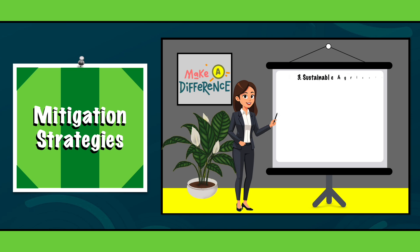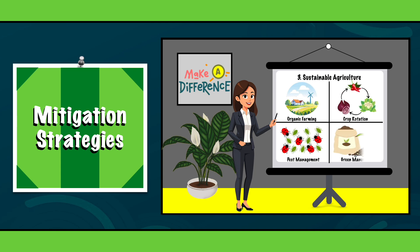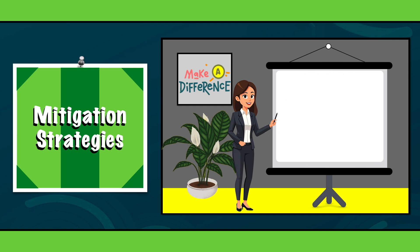3. Sustainable agriculture. Using organic farming methods such as crop rotation, integrated pest management and green manuring can improve soil quality and protect biodiversity.